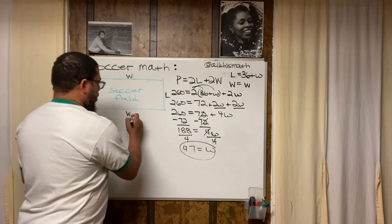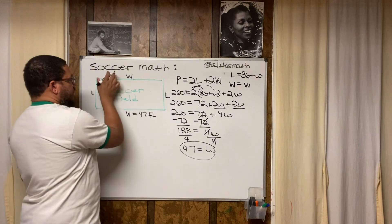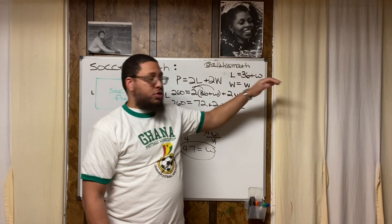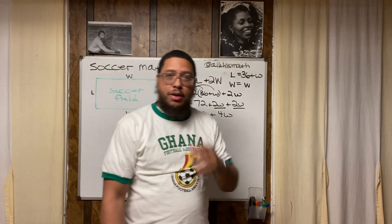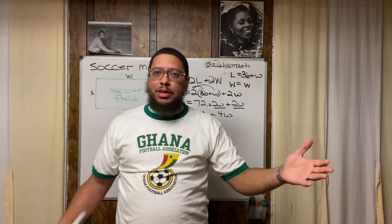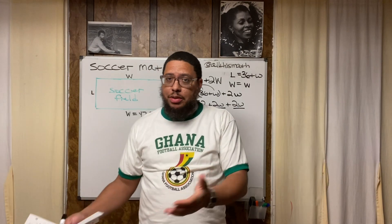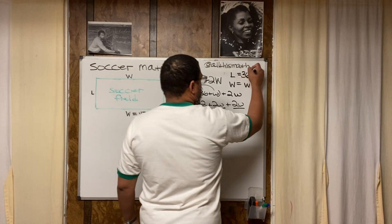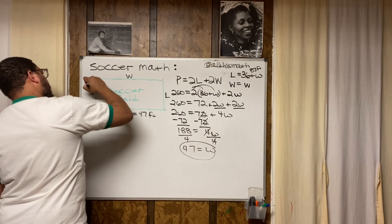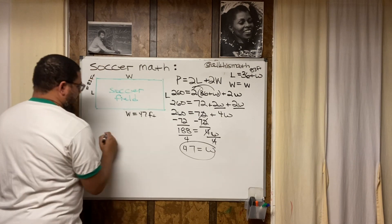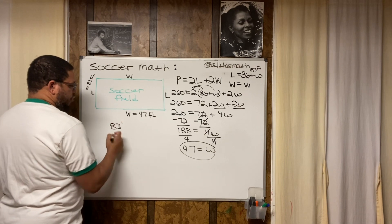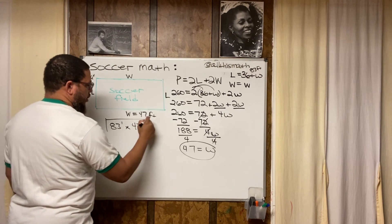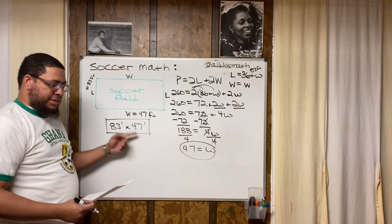The soccer field is 47 feet wide. Now we need the length. The problem said the length is 36 feet more than the width, so I just add 36 to 47. For the mental math: 40 plus 30 is 70, and 7 plus 6 is 13, so 70 plus 13 is 83. The length is 83 feet. So the dimensions of this soccer field are 83 feet by 47 feet.